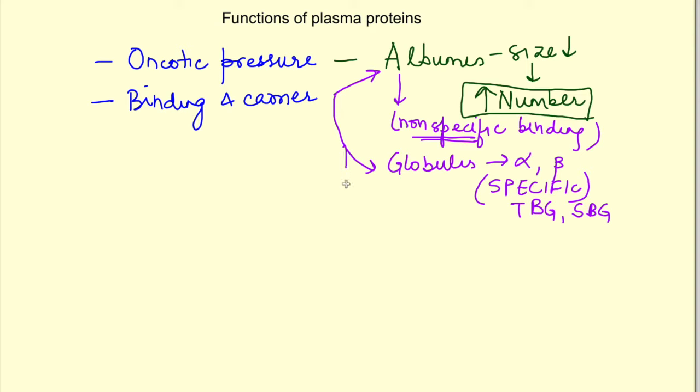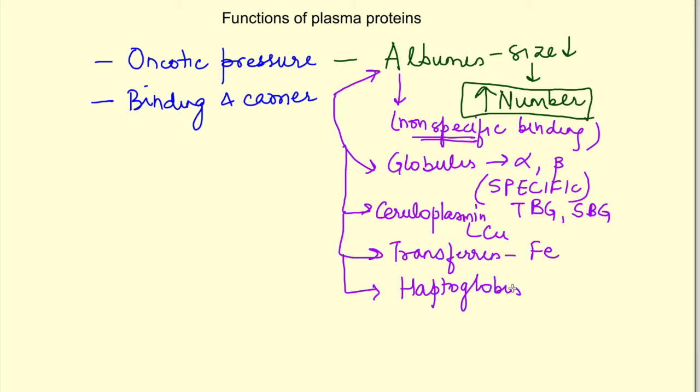There are other proteins also for transport of substances like ceruloplasmin for transport of copper, transferrin for iron, haptoglobin for transport of cell-free hemoglobin, and hemopexin which binds to porphyrins.